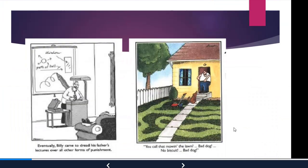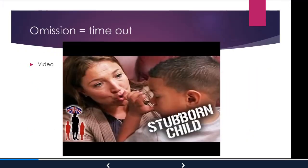Here are a couple of quick tests using cartoons. One cartoon is an example of punishment — a dad lecturing is aversive to the child. Another could be omission, with a 'no biscuit' sign, or punishment from scolding. You should also watch the Super Nanny video, which shows child-rearing using all these principles — including an effective use of timeout with a child who has a long learning history without discipline. When we come back for part two, we'll talk about methods for investigating operant conditioning.